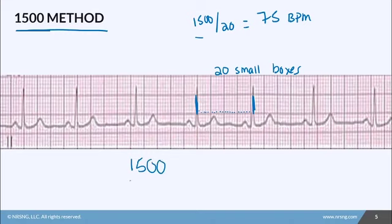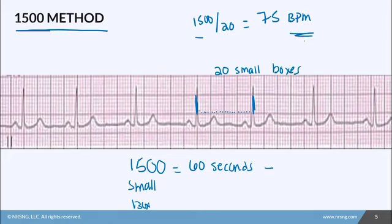There are 1500 small boxes in 60 seconds, and 60 seconds is one minute — that's why you divide 1500 by the number of small boxes you count. This method is more reliable than the 300 method because you're getting more specific by counting every small box.